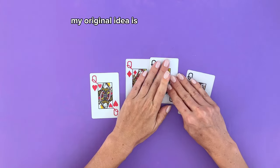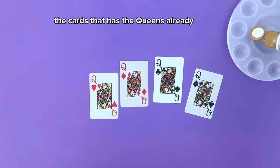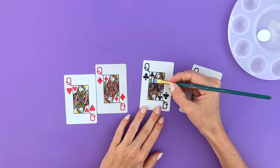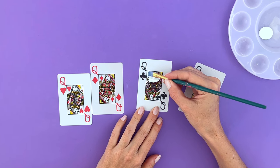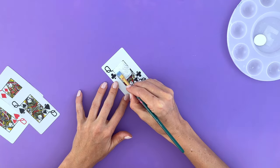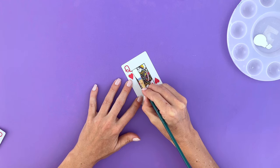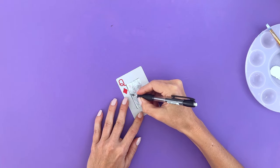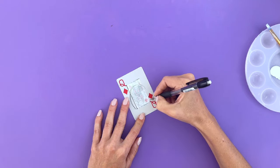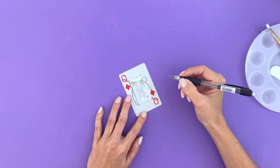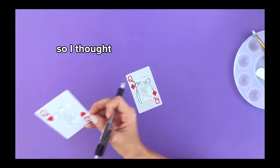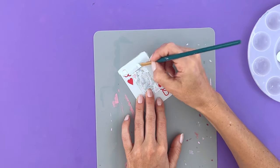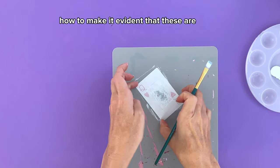My original idea is to use the space of the cards that has the queens already on them so you can still see they were real playing cards. But after the first layer of paint I started to sketch my first new queen and it felt weird that the sketch was covering part of the diamonds. So I thought, okay I'm just gonna paint the whole thing and then figure out how to make it evident that these are in fact actual playing cards.